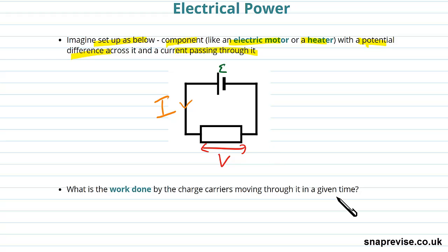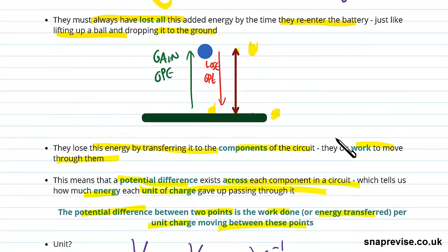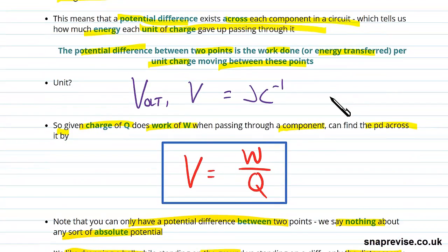Well we remember that, going back to this video here, the potential difference across a component is just the work done moving through that component divided by its charge. So we need to multiply this potential difference by this charge to get the work done moving through it.